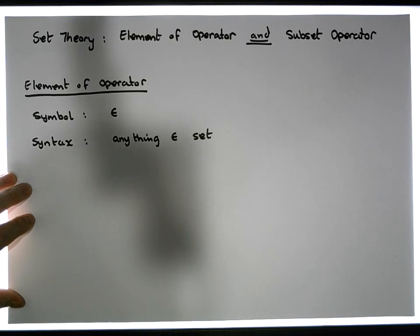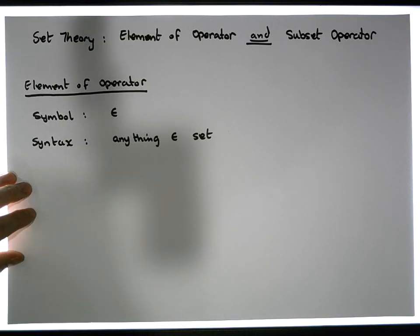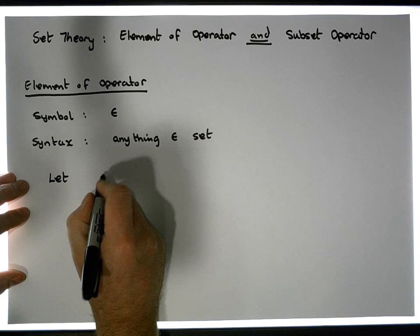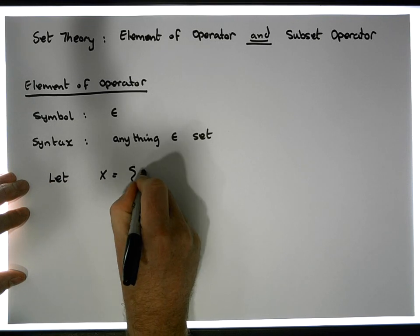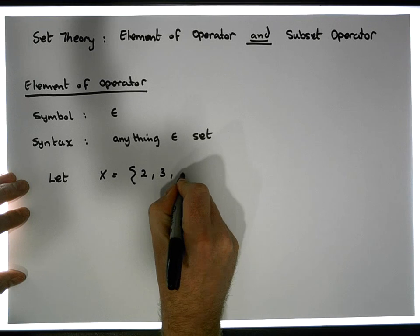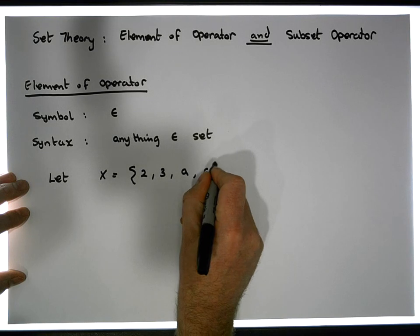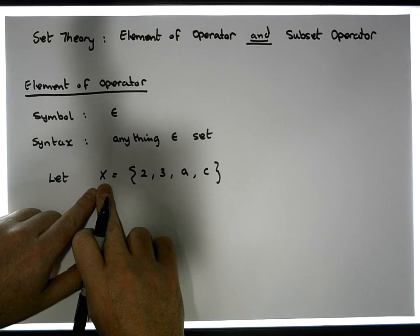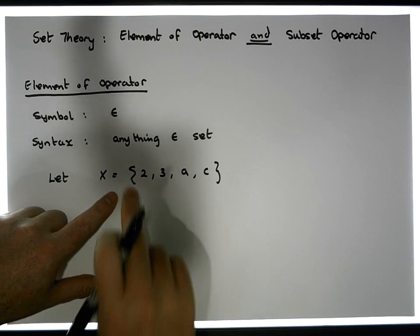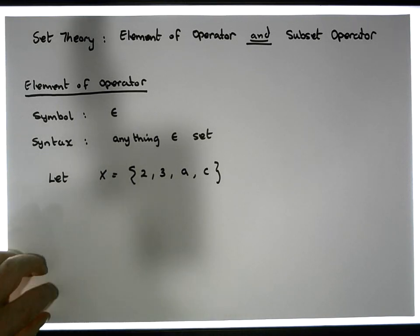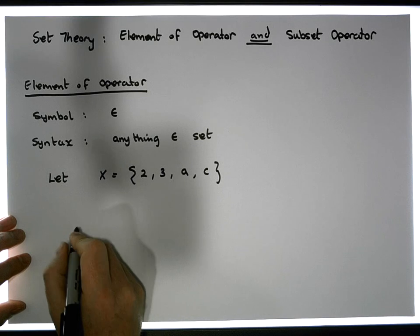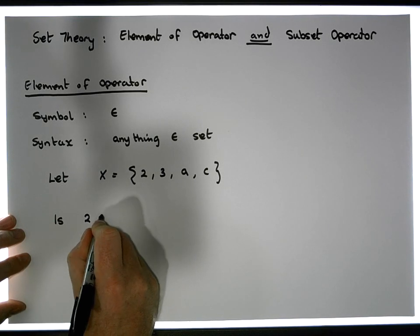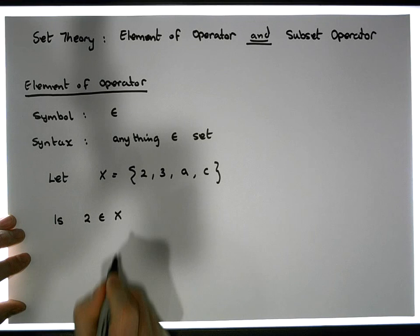If it is listed, it returns true; if not, it returns false. Let's consider a set: let X equal the set containing the values 2, 3, a, and c as an example. We're going to ask some questions about some members of X.